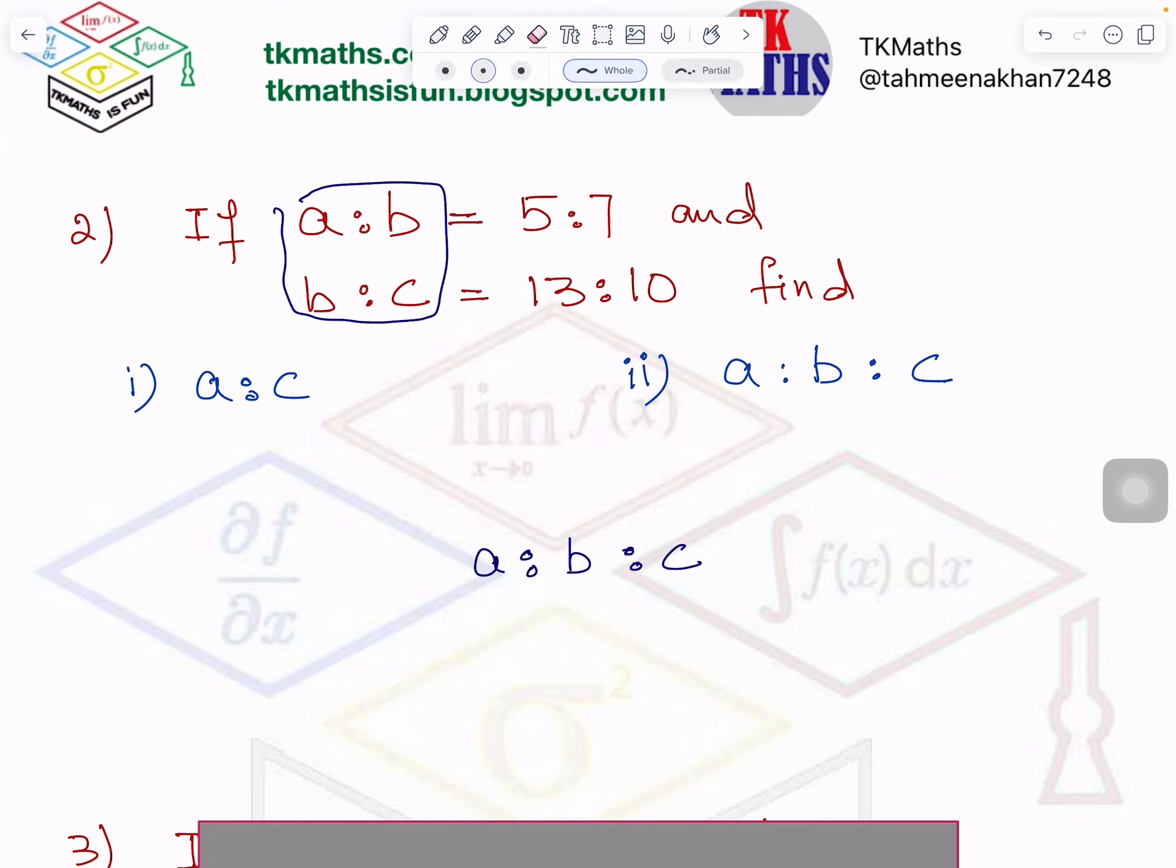So now what is a is to b from the first line? a is to b is 5 is to 7. What is b is to c? 13 is to 10. Right. Let me take a calculator. Otherwise I can make mistake in calculating. Just give me a second. You can also grab your calculator.